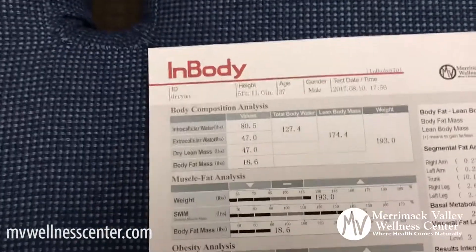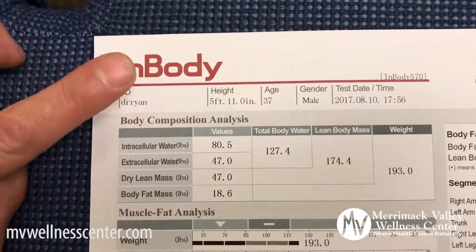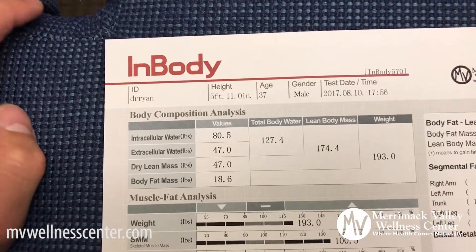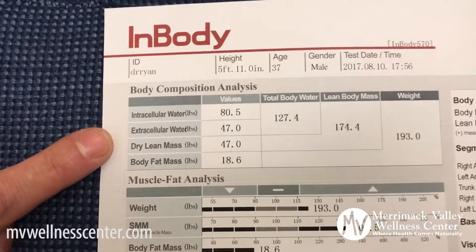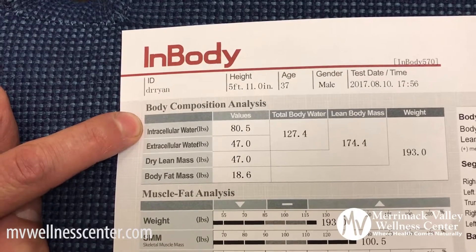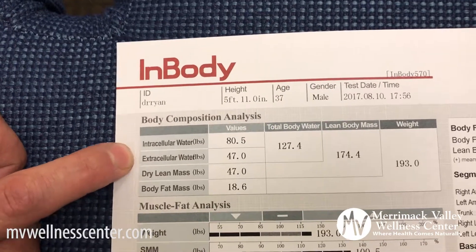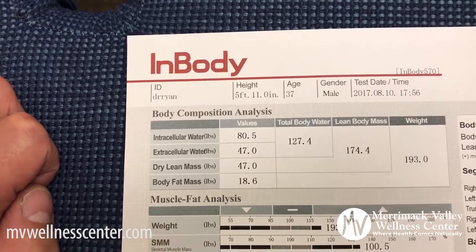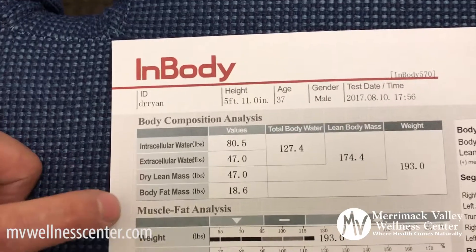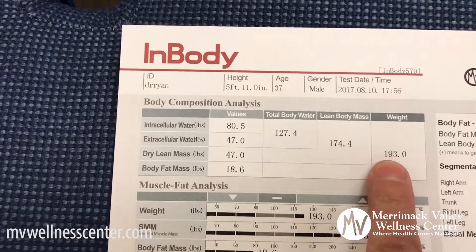I have the printout of my most recent InBody scan here — this is me. It shows my height and age. The first category is the whole breakdown of body composition: intracellular water, which is all the water inside the cell membranes; extracellular water, which is outside the cells and in the bone marrow; dry lean mass; and total body fat. My total comes to 193 pounds.